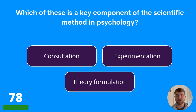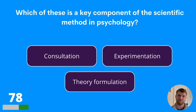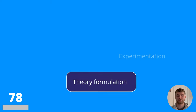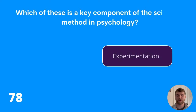Question seventy-eight: which of these is a key component of the scientific method in psychology? Consultation, experimentation, or theory formulation? The answer to question seventy-eight is experimentation.